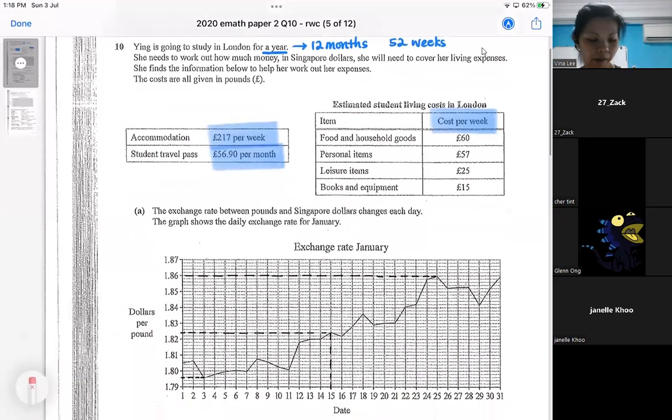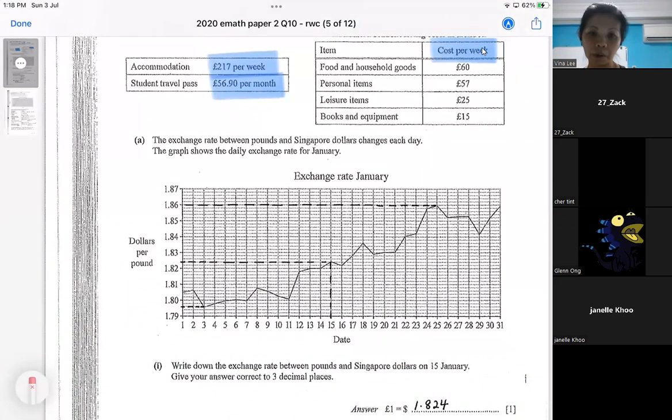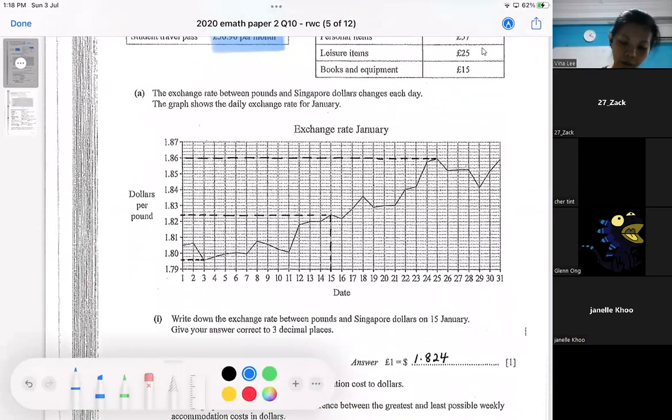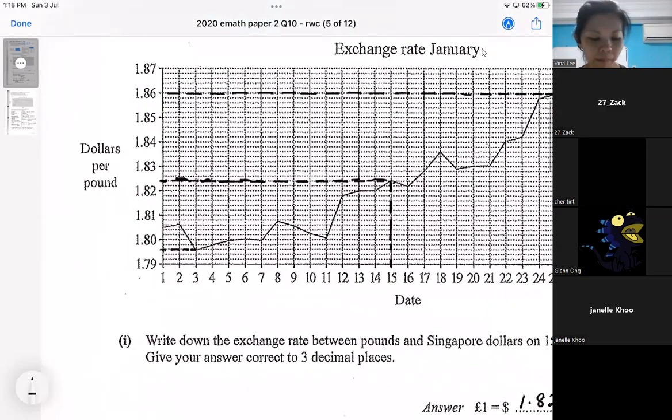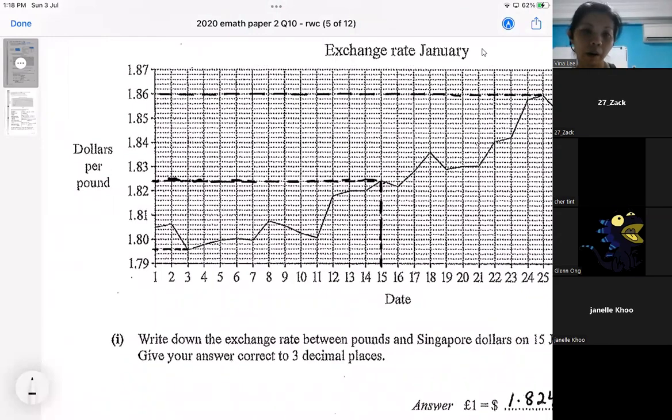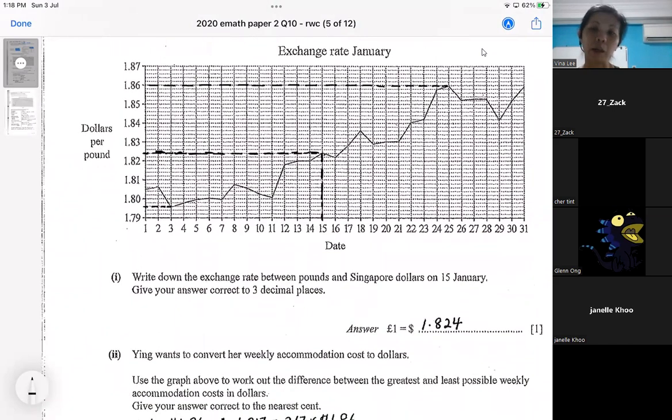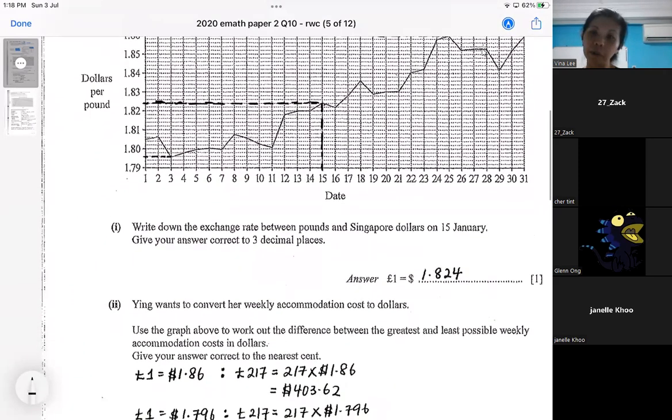So it's 12 months and 52 weeks. And then there is this exchange rate. For this one, you've got to use the dotted line to read. Otherwise, it's actually not clear to you. So you will really need to use the dotted line to go and read the exchange rate on 15 January. I think I marked some of you, there are some of you who got this wrong. I think because the squares look very small. So you need to read carefully to know the exchange rate. One pound is equivalent to $1.824.